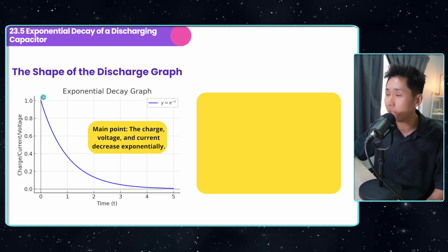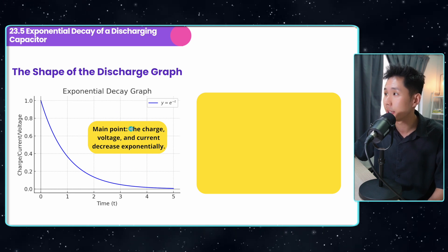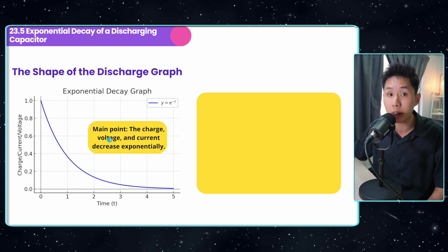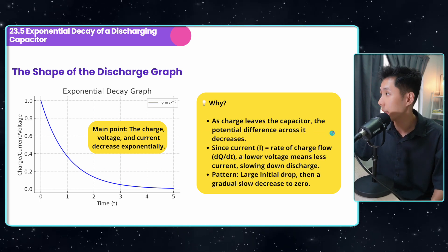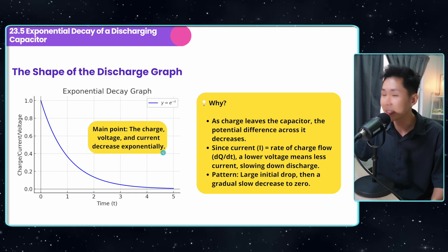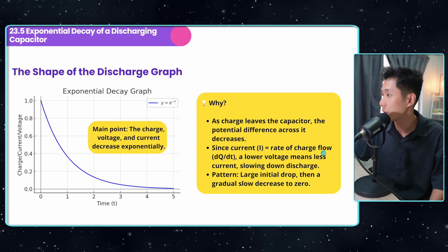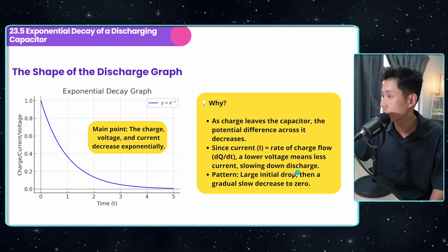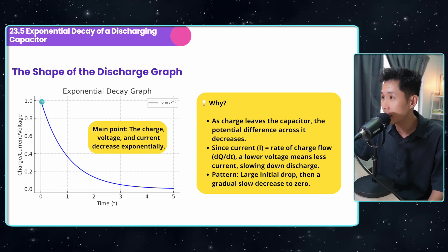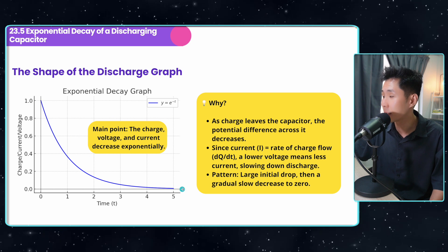To show you an image, this is how it looks like, it drops exponentially, not just the charge, but also the voltage and current. The reason for that is because as charge leaves the capacitor, the potential difference across it decreases. And it's like a chain effect. Since current equals rate of charge flow, a lower voltage means less current slowing down the discharge. So therefore the pattern will be initially a lot of discharge, and then a gradual slow decrease to zero.